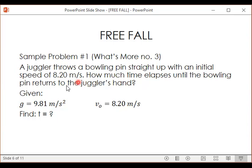So this is from What's More number 3. A juggler throws a bowling pin straight up with an initial speed of 8.20 meters per second.